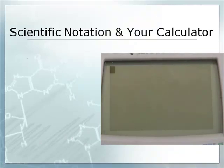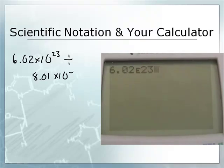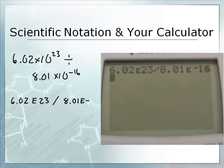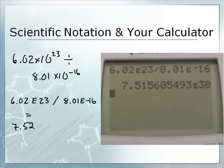All right, let's do one more. Let's do a little calculation. So let's say I've got 6.02 times 10 to the 23rd, and I want to divide that by 8.01 times 10 to the negative 16th. I don't know why I would do that. So 6.02, second E, 23. That means times 10 to the 23. Divided by 8.01, second E, which means times 10 to the negative 16. And I hit Enter and I get some big numbers. 7.52 times 10 to the 38th power. So it says 7.52 E 38.